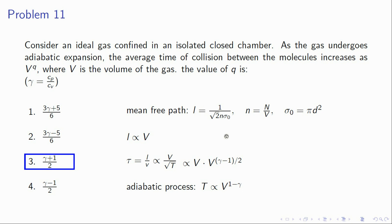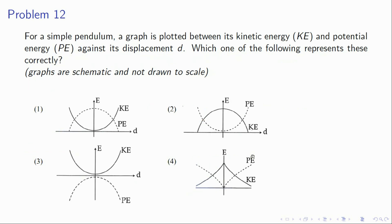Problem 12: a simple pendulum's kinetic energy and potential energy are plotted against displacement. At the extreme position kinetic energy is zero, and kinetic energy goes as ½ω²(A² − x²) — an inverted parabola. Option 2 is right.